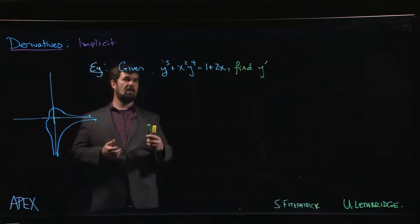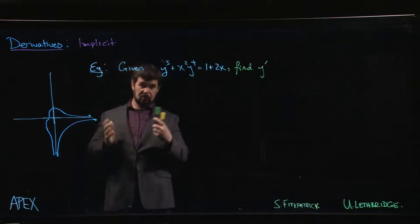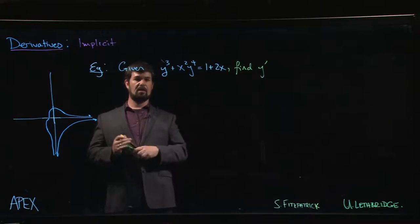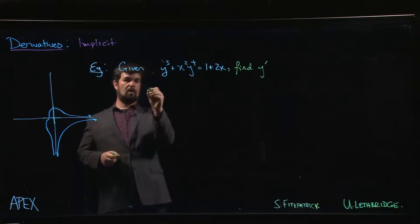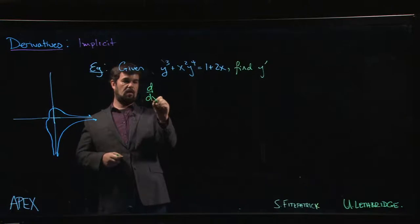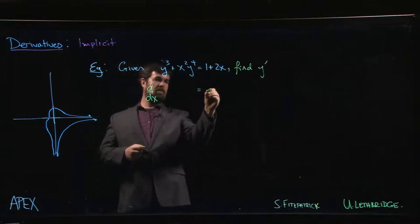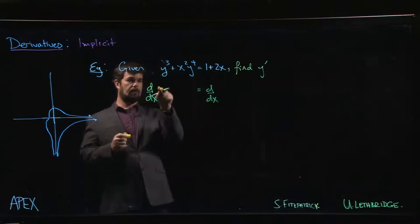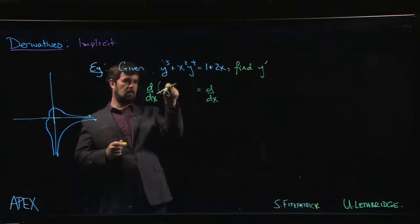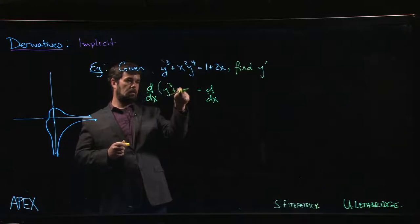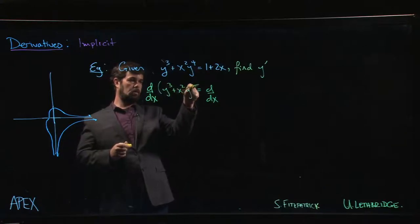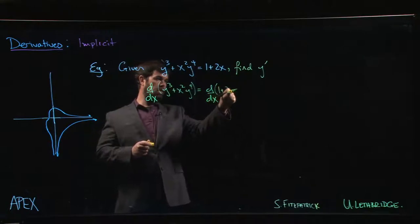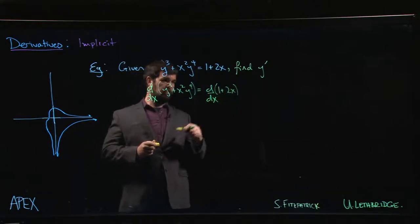So again the assumption here is that y is defined implicitly as some function of x. This allows us to take the derivative of both sides of the equation. So we can do the derivative with respect to x on both sides, where on this side we're doing y cubed plus x squared y to the 4, and on the other side we're doing 1 plus 2x.